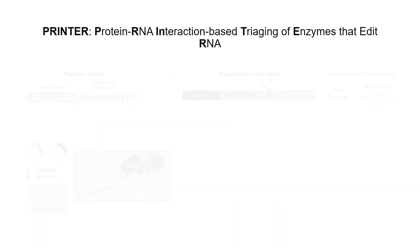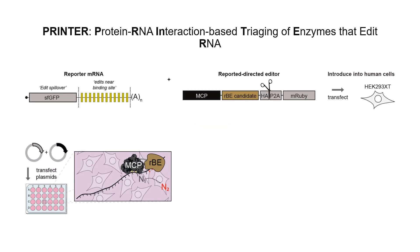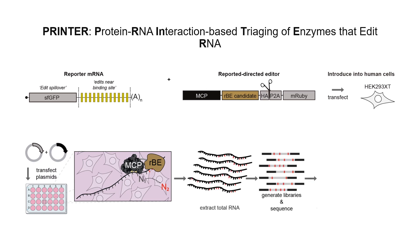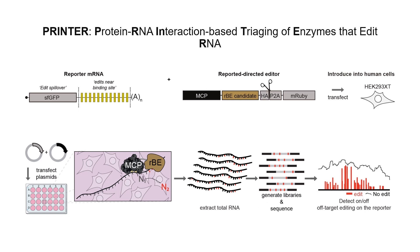Our experimental approach involves transfecting HEK-293XT cells with plasmids encoding both system components, followed by RNA extraction and high-throughput sequencing to quantify and locate the edits. This precise methodology allows us to profile the efficiency and specificity of individual RNA-based editing enzymes.